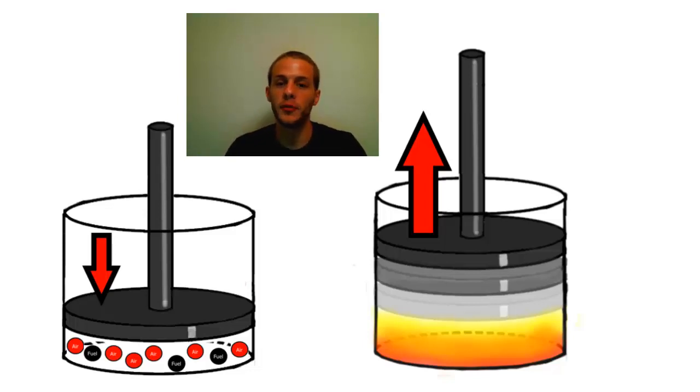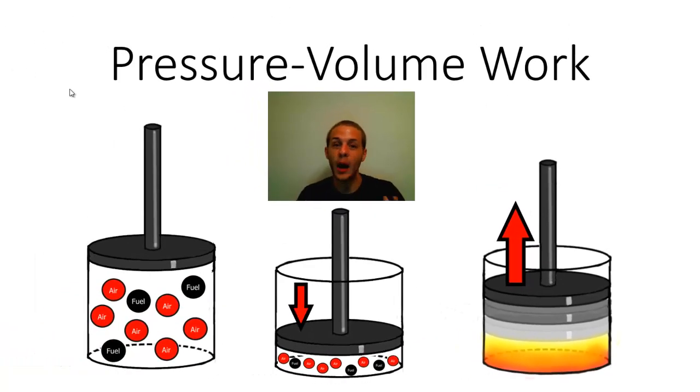So this is one type of pressure volume work. And again we're going to learn how to calculate the amount of work, either given off by the system or done on the system by the surroundings, using things that are fairly easy to measure.